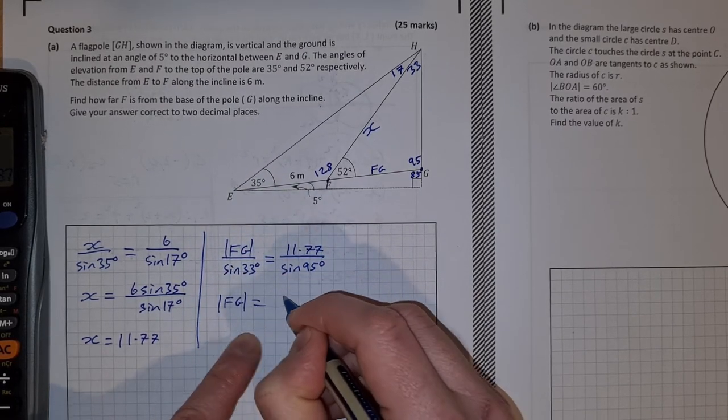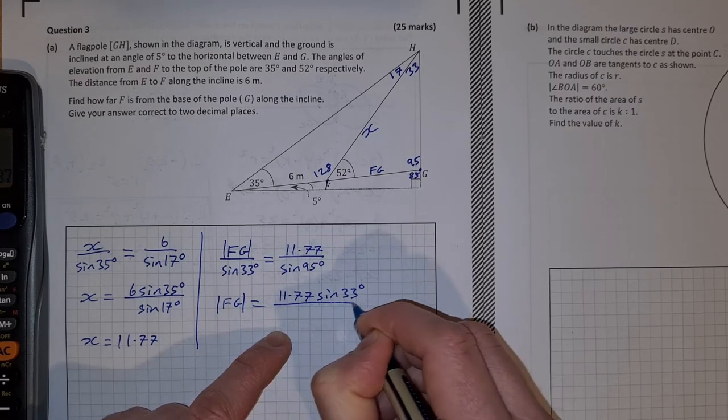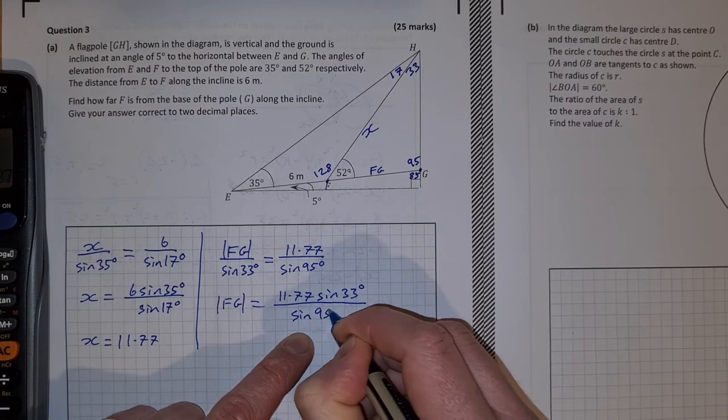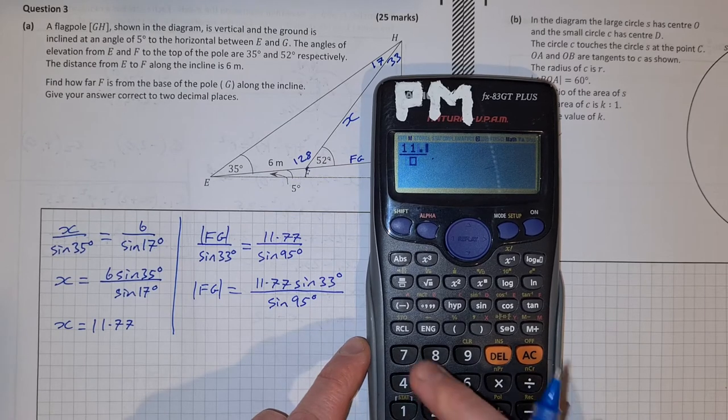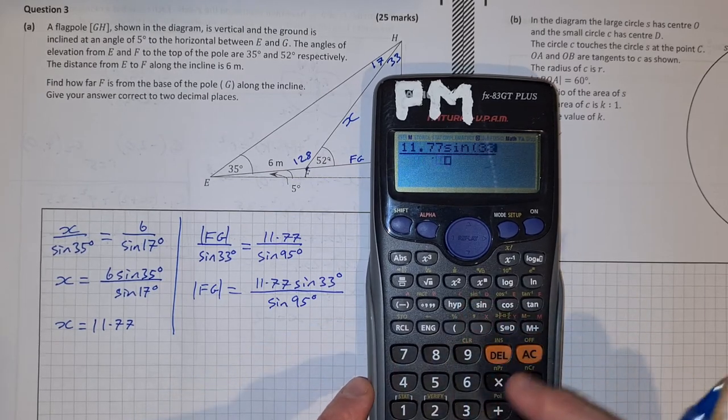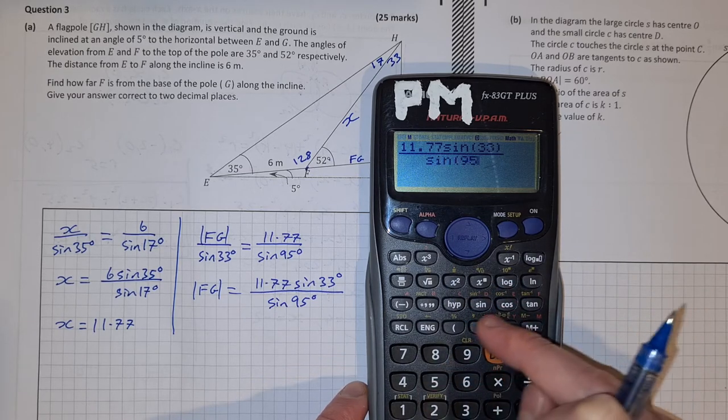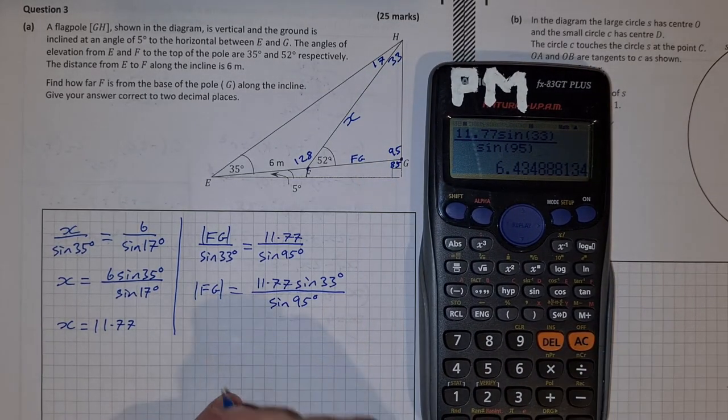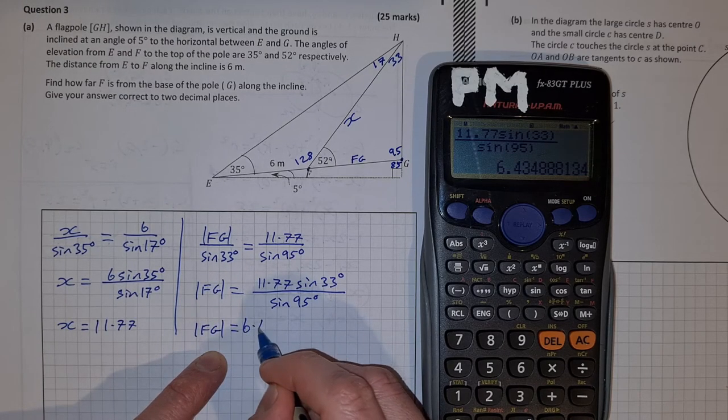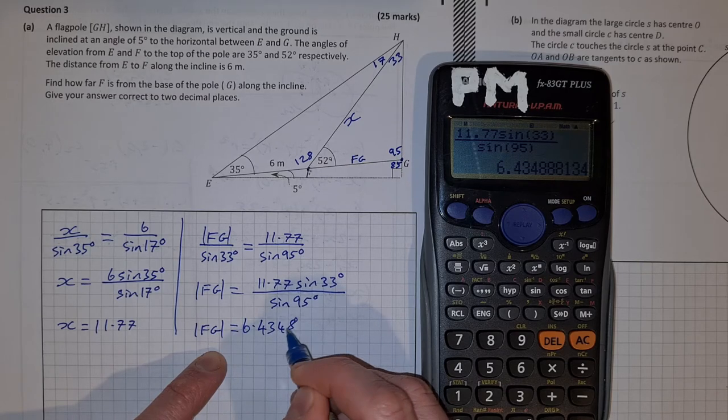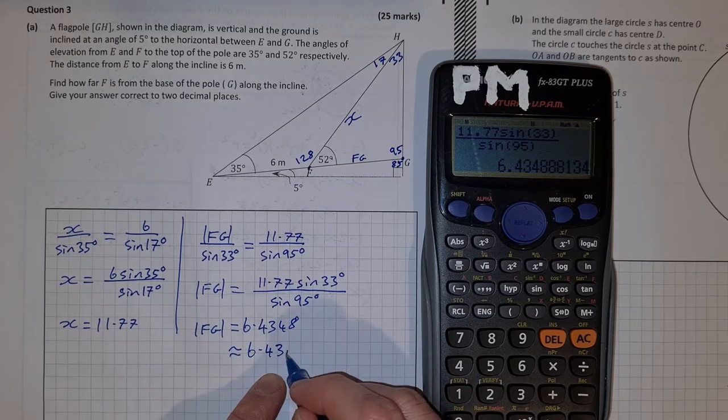So if I want FG, FG is equal to 11.77 sine 33 degrees over sine of 95 degrees. So you can set this up again, it's 11.77 sine 33 degrees over sine of 95 degrees, which is 6.43... FG is equal to 6.4348. We want it correct to two decimal places, so that's approximately equal to 6.43 meters.